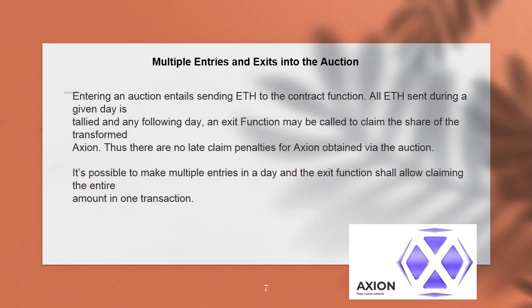Entering an auction entails sending ETH to the contract function. All ETH sent during a given day is pooled, and the following day an exit function may be called to claim the share of the transformed Axion. There are no late claim penalties for Axion obtained via the auction. It's possible to make multiple entries in a day, and the exit function allows claiming the entire amount in one transaction.